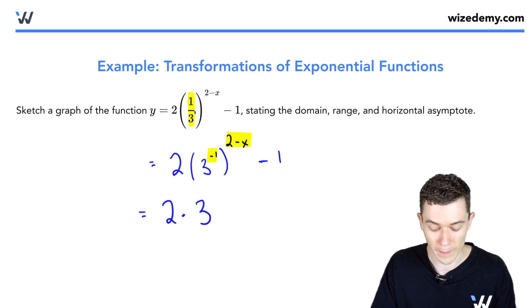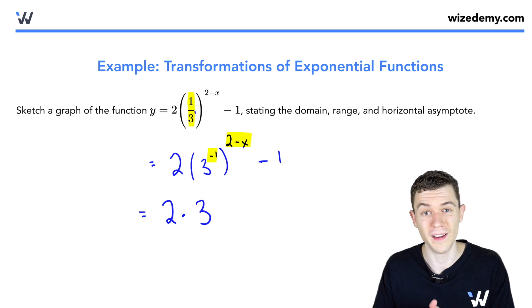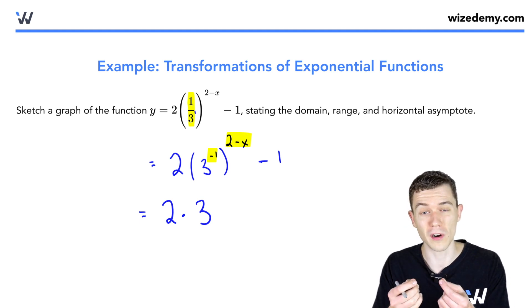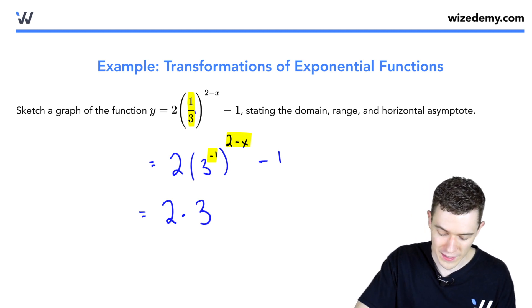We multiply negative one times two minus x minus one, and this is a pretty slick trick. Anytime you multiply two terms being subtracted by a negative, that just interchanges them. This is just going to be x minus two.